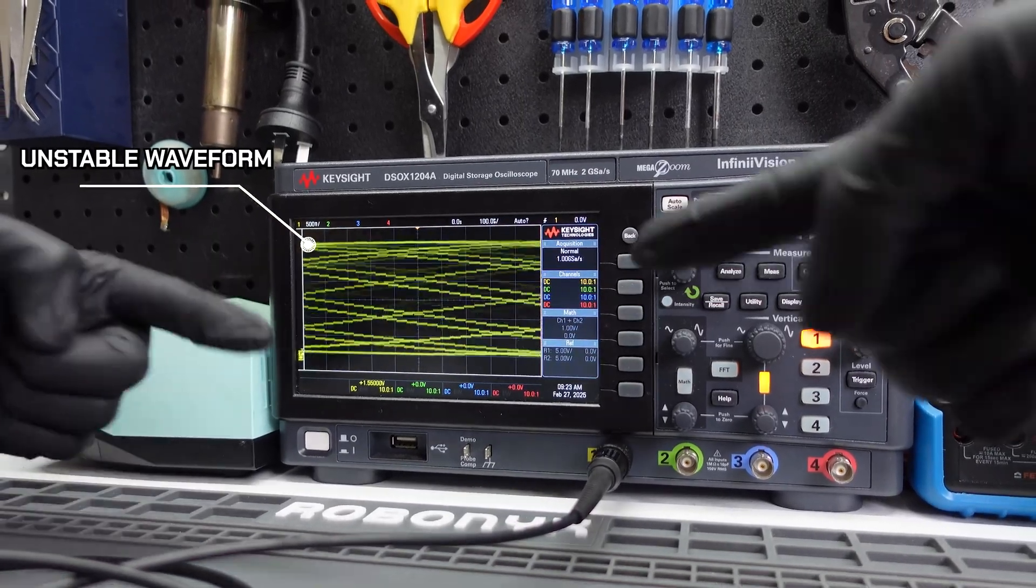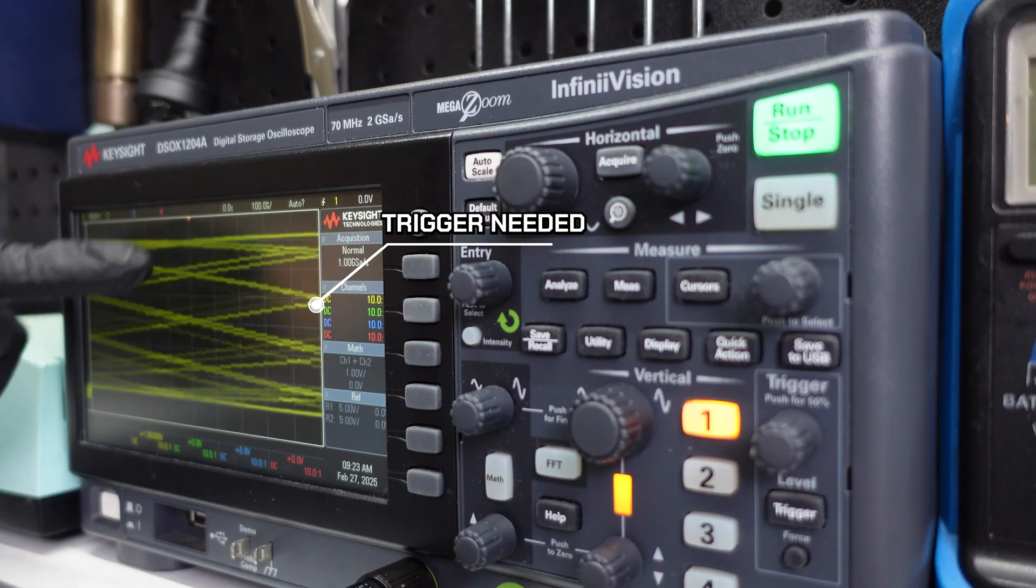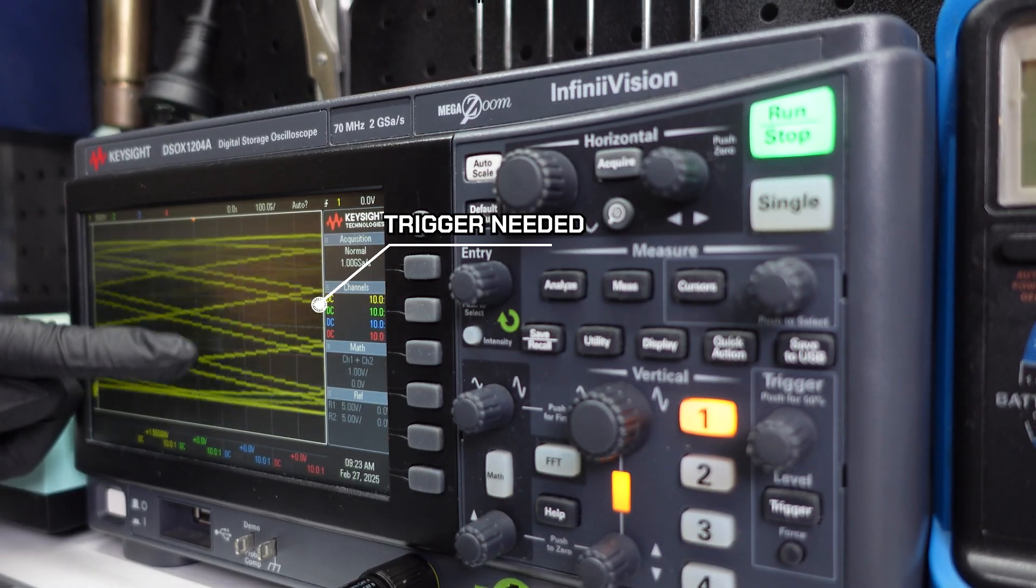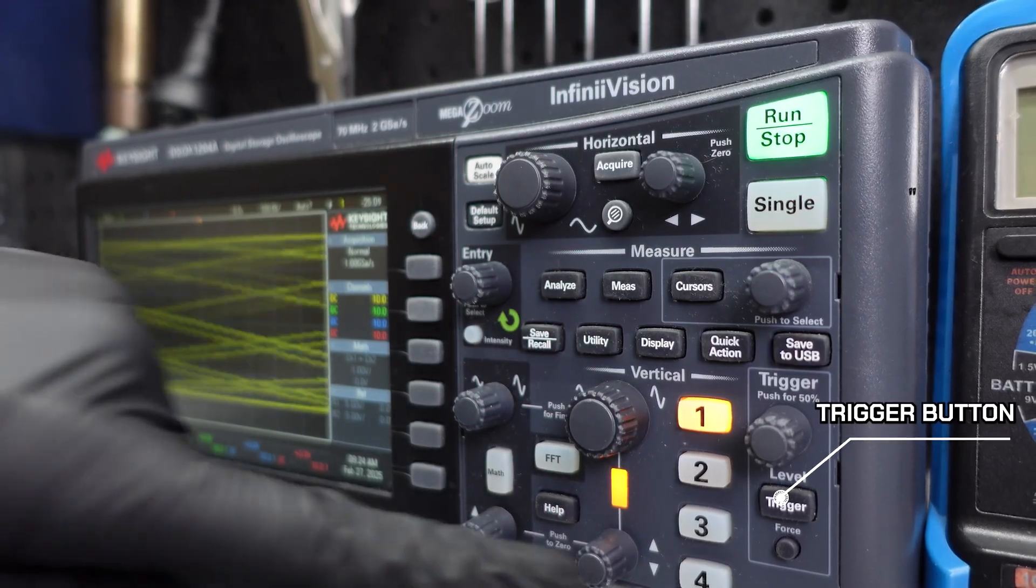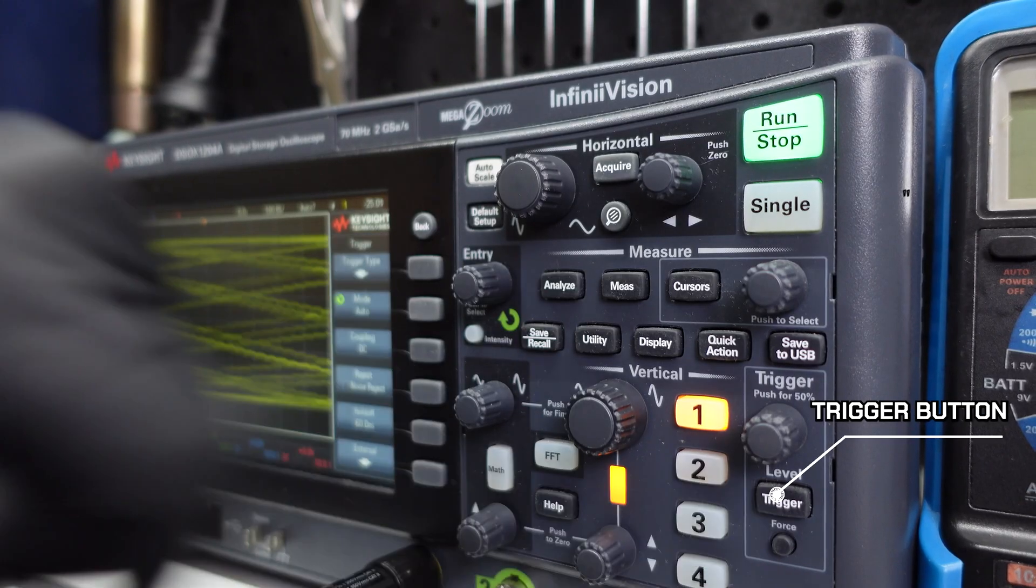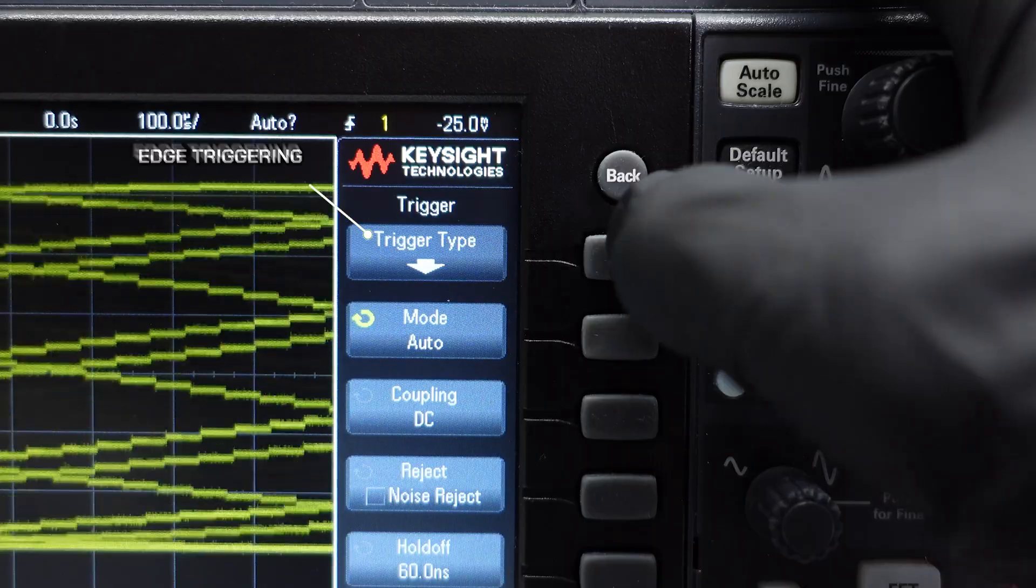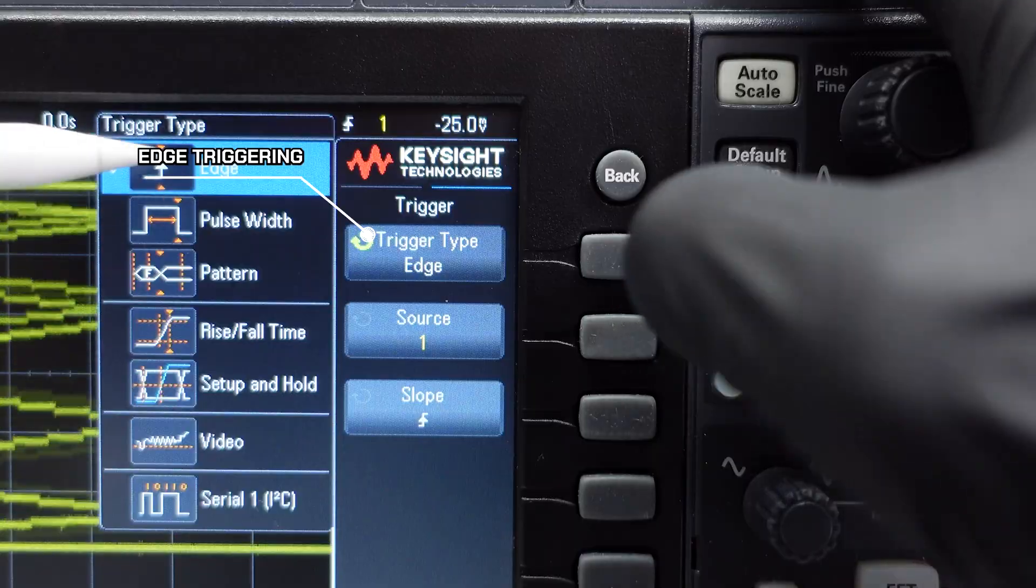Next thing is this waveform is jumping around like crazy. That's because the scope doesn't know when to start drawing the wave. What we can do is set a trigger to tell the scope to start drawing that waveform at a specified voltage.